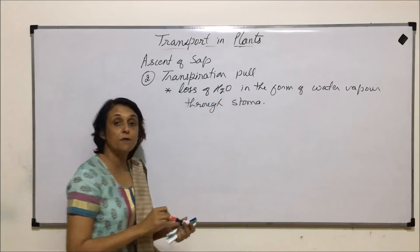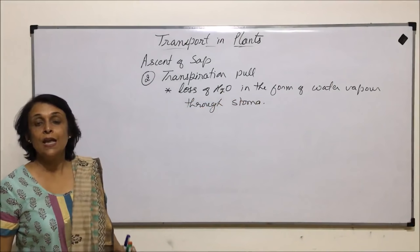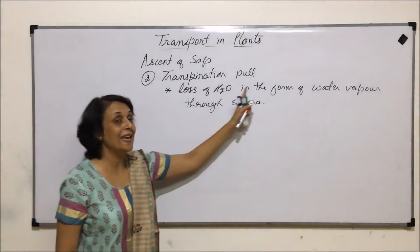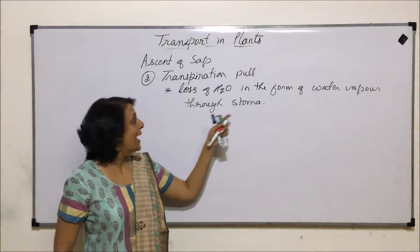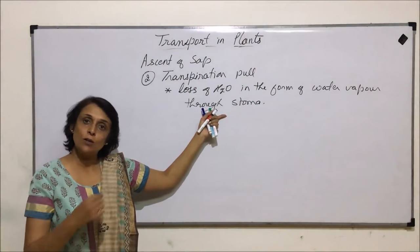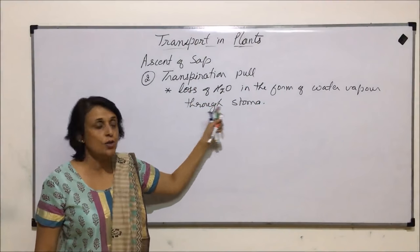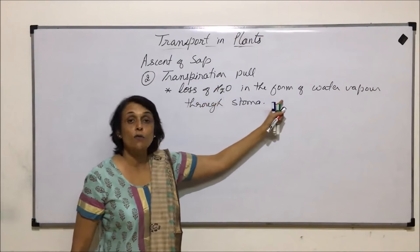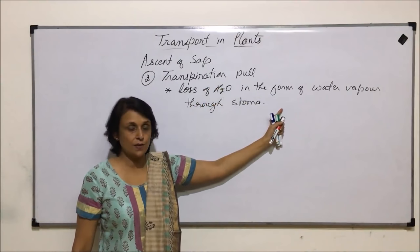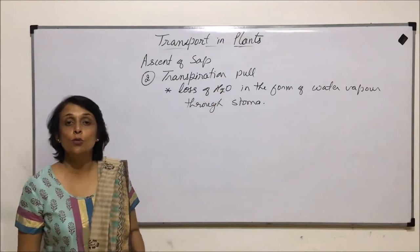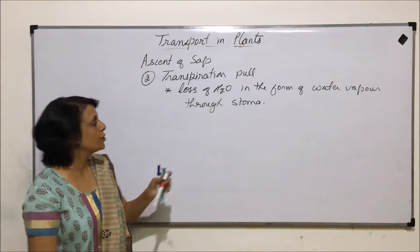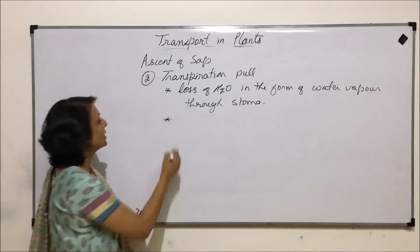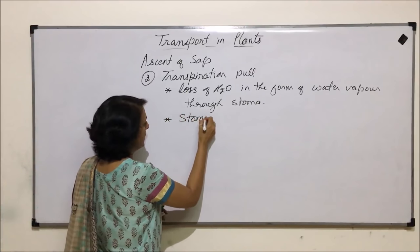This is where transpiration pull differs from guttation. In guttation, water is lost in the form of liquid water through openings called hydathodes. In transpiration, the same water is lost but in the form of water vapor — that is, gaseous state — and that takes place through stomata.